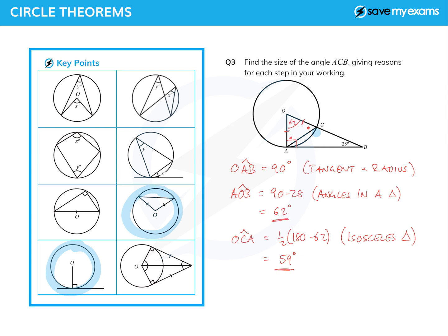Finally I'm in a position to find the angle I actually want: ACB. I now have the angle with the red dot, which is 59°, and it's on a straight line with ACB, so I can do 180 minus 59, which is 121 degrees. Reason: straight line. There may be other ways of doing that, but I have given reasons for every step and just found the angles I can. Practice, practice, practice.